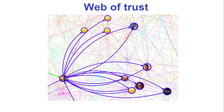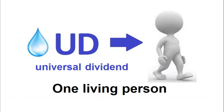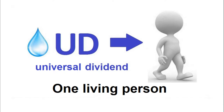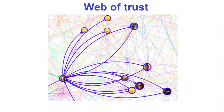To receive the UD every day, you have to enter the Web of Trust — a network of individuals whose existence is guaranteed by five members. For the libra currency's credibility, it is crucial that the UD is only perceived by existing people, with only one UD per person. Each newcomer must be certified by five members within two months. Here is a representation of the web, with certification links in blue: you are certified when at least five arrows point towards you.